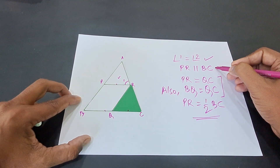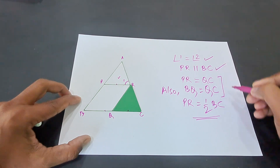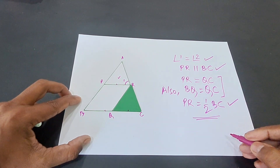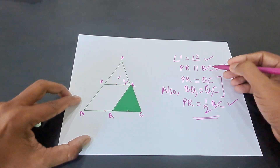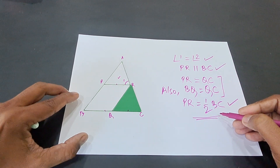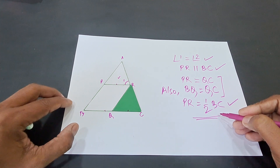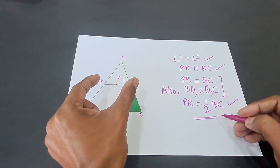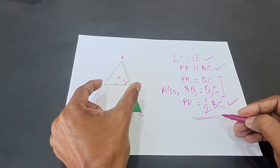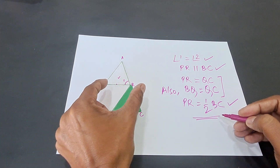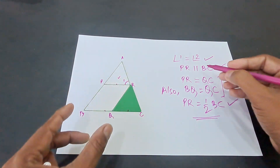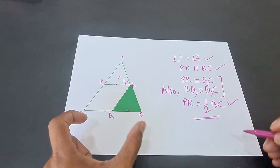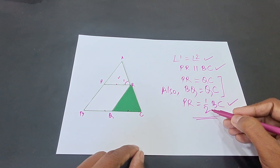Coupling the first result and the second result together, you have actually proved the midpoint theorem — that a line which joins the midpoints of two sides of a triangle is parallel to the third side and half of it. That completes our activity on the midpoint theorem.